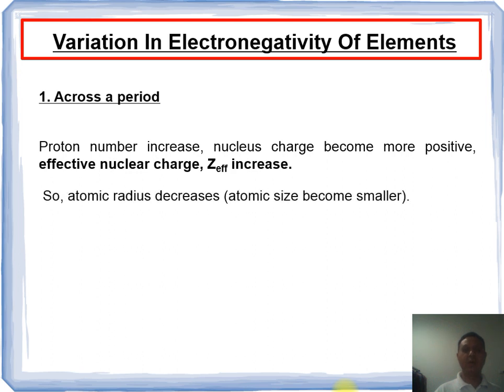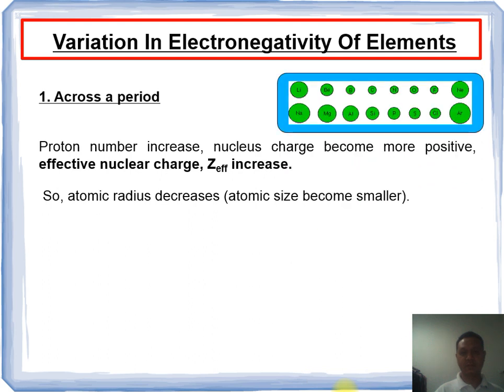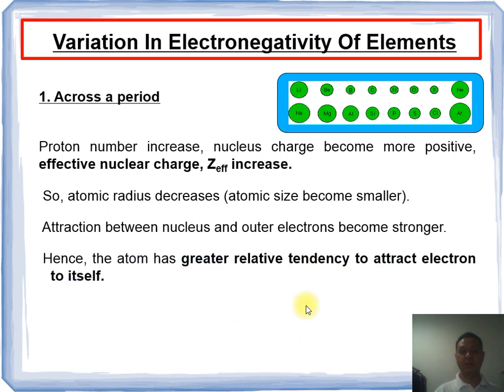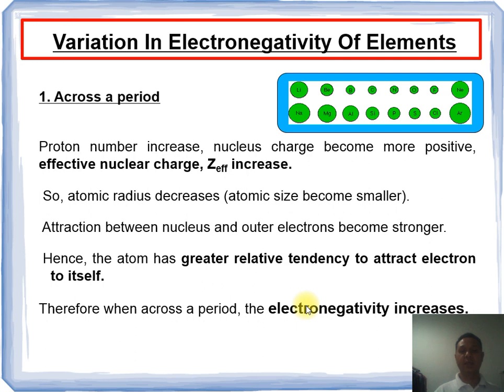So, atomic radius decreases. Attraction between nucleus and outer electrons becomes stronger. Hence, the atom has greater relative tendency to attract electrons to itself. Therefore, when across a period, the electronegativity increases.